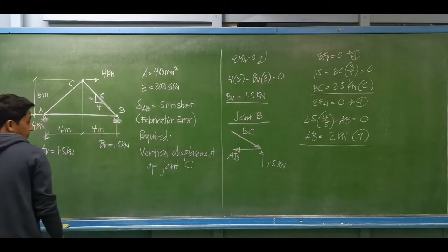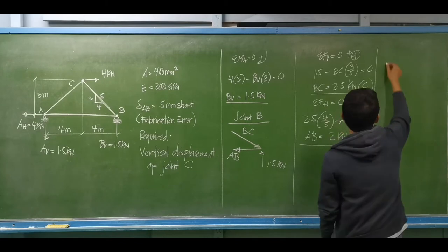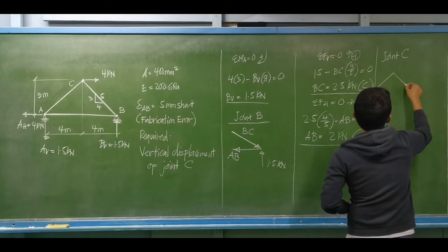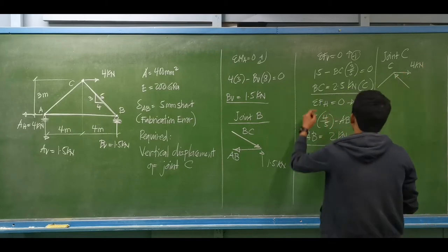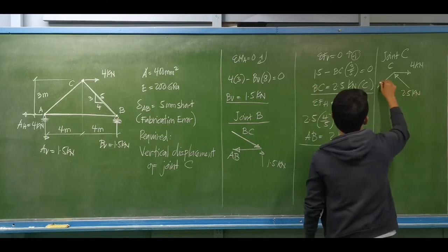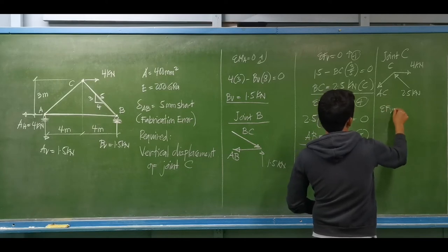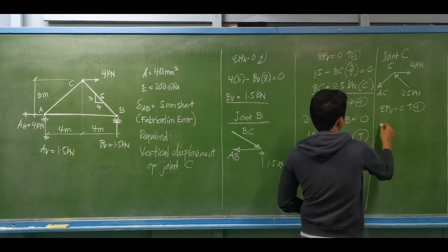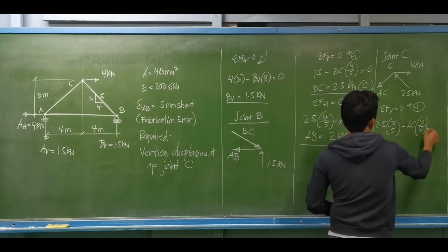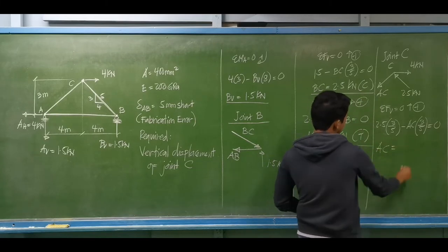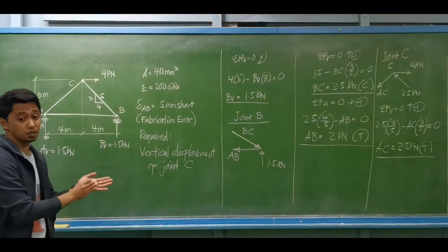For the last member, proceeding to joint C: we have the 4 kN load and a compressive force from BC equal to 2.5 kN. Assuming member AC is under tension, by summation of forces vertical equal to zero: 2.5 times (3/5) minus AC times (3/5) = 0. So the actual force for member AC equals 2.5 kN under tension. Those are the actual forces for each member due to the real load.